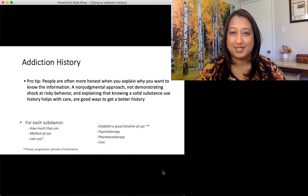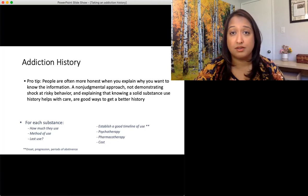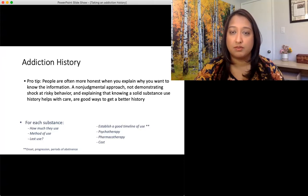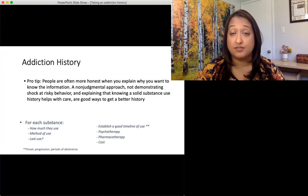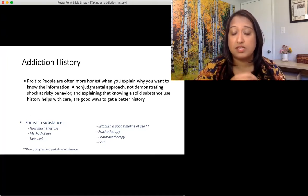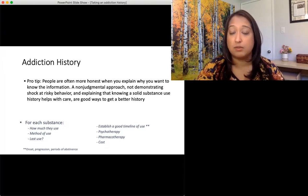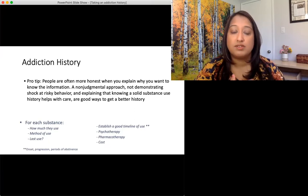Pro tip: when doing an addiction history, patients are often more honest with you if you explain why you want to know the information and ask in a non-judgmental manner. Straightforward questioning and explaining — 'it's really important for me to provide you with good care and I need the answers to these questions to do so' — is key. Not demonstrating shock at risky behavior is very important, and explaining that a solid substance use history helps with care. For example: 'I need to know how much fentanyl you use because I'm worried about withdrawal and want to prescribe enough opioids to prevent that.' When you explain it that way, people are a lot more likely to be fully honest.